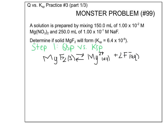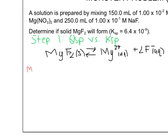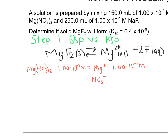What we have is 150 mL of 1×10⁻² molar Mg(NO₃)₂. This is going to split into Mg²⁺ — there's just one of those, so the concentration of Mg²⁺ is 1×10⁻² molar. It's also going to split into NO₃⁻, and there are two of those, so that concentration is 2.0×10⁻² molar because there's twice as many.